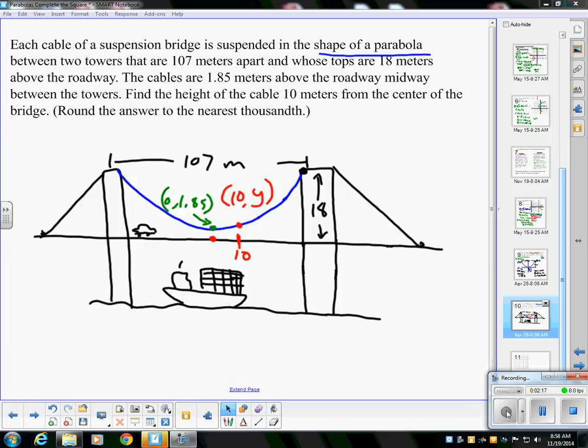We're going to do a graph with this. I'm going to minimize this picture and just do a graph that gives you the specifics. The cables are 1.85 meters above the roadway midway between the towers, so you're going to find out that's going to be our vertex.